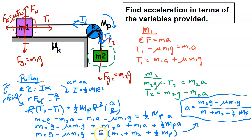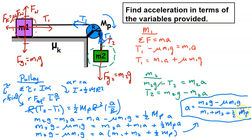Factoring out the acceleration on the right side and solving for a, the final result is: a = (m2g − μ·m1g) / (m1 + m2 + (1/2)·mp), where mp is the mass of the pulley.